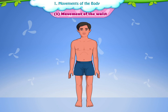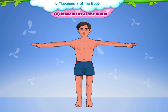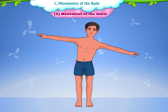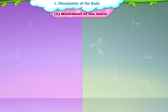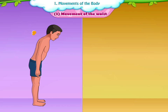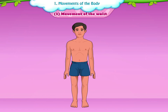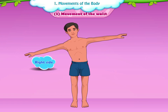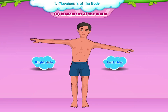Movement of the waist: The waist helps us to move our body forward and backward. It also helps us to turn the body towards the right side and the left side.